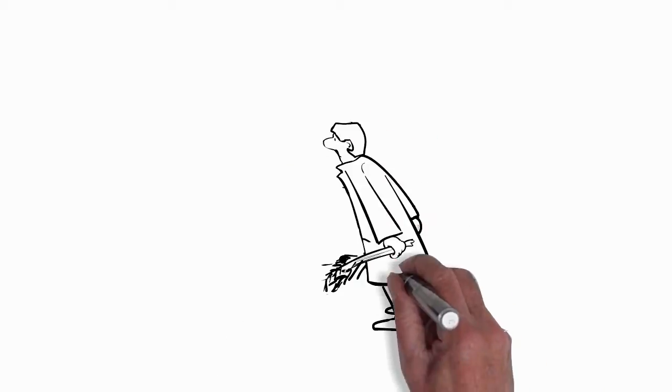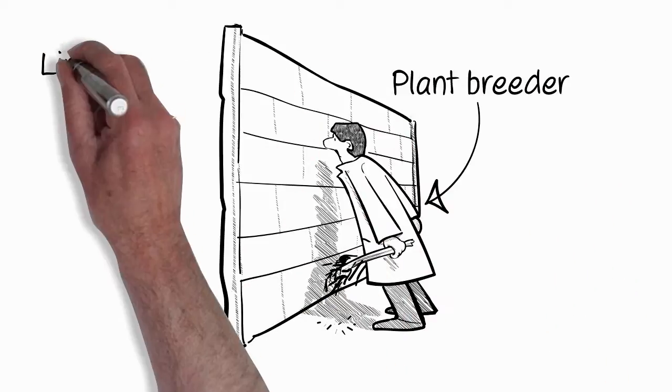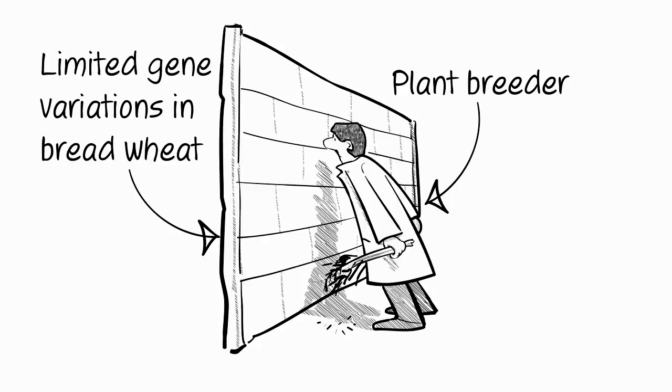We were looking for anything that would improve bread wheat. Plant breeders have hit a brick wall in what material they can use to produce their novel varieties.